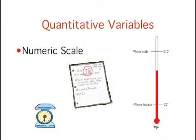Quantitative variables are variables measured on a numeric scale. Height, weight, temperature, and scores on an exam are all examples of quantitative variables.